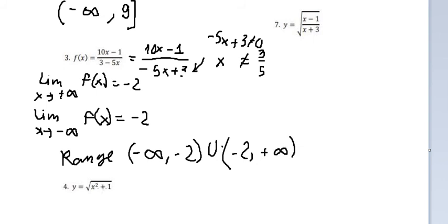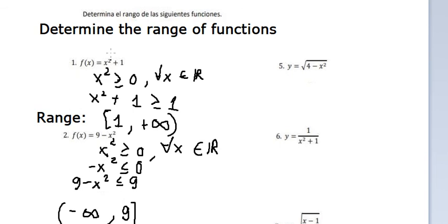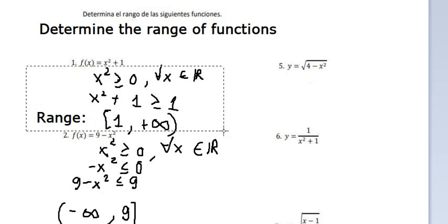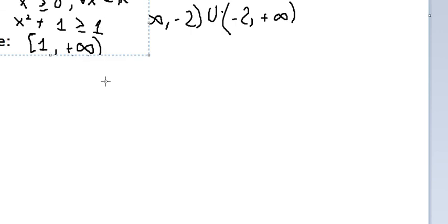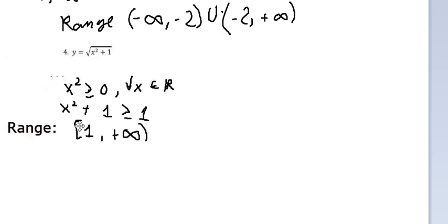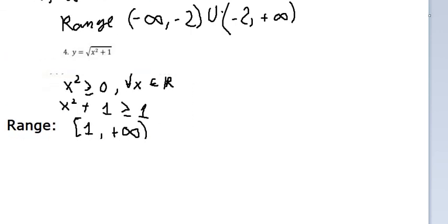For the next one, we do the same technique. Because we have a square root and the expression inside is always positive, the range starts from number one.